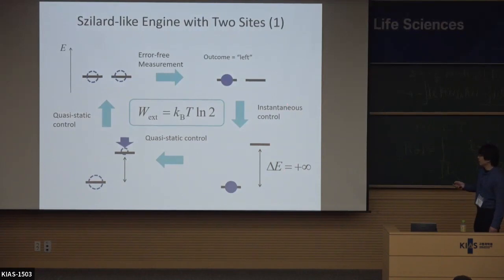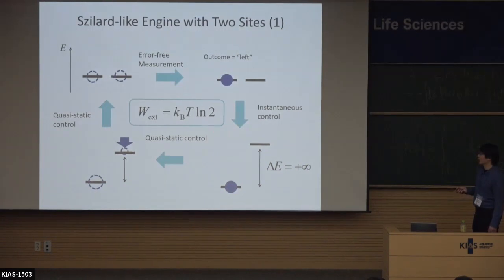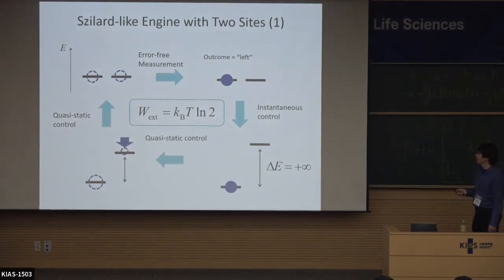After the instantaneous control to prohibit the transition, we very, very slowly push down the right energy level to the original value. From this process, we can extract kT log 2 of work. In that sense, we can have the same work value as the case of the Szilard engine and the upper bound of the second law of thermodynamics is achieved.